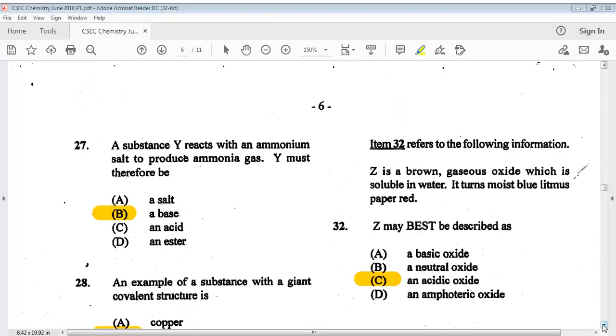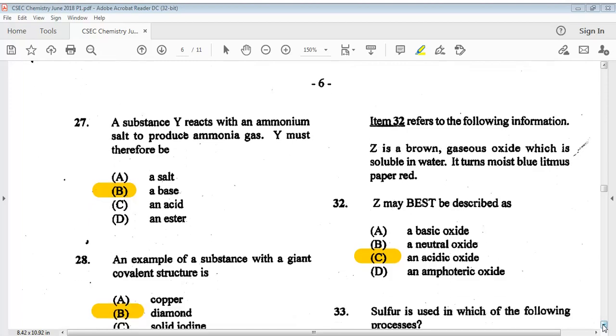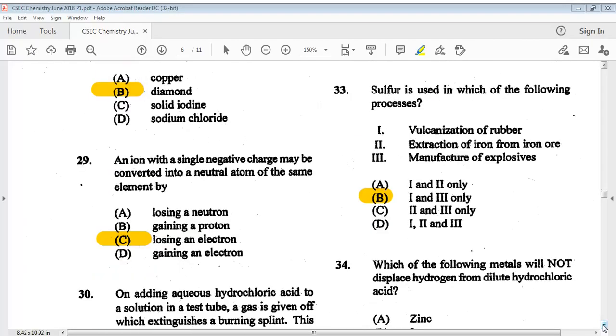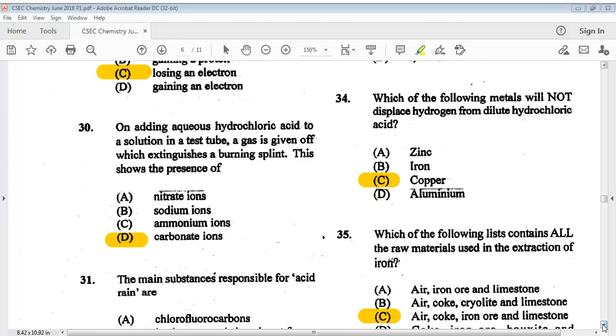Let's go on to number twenty-seven. A substance Y reacts with an ammonium salt to produce ammonia gas. Y must therefore be, the answer is B, a base. Question twenty-eight: an example of a substance with a giant covalent structure is B, diamond. Question twenty-nine: an ion with a single negative charge may be converted into a neutral atom of the same element by C, losing an electron. Question thirty, the answer is D.